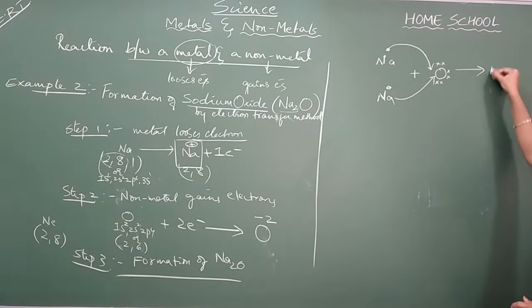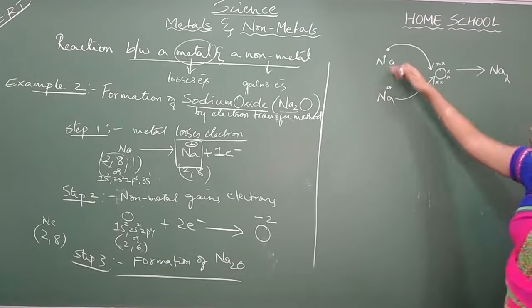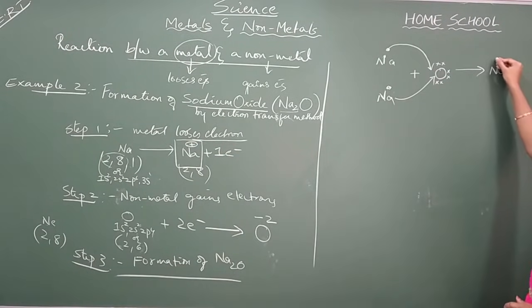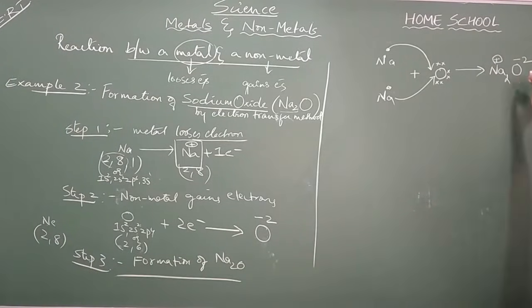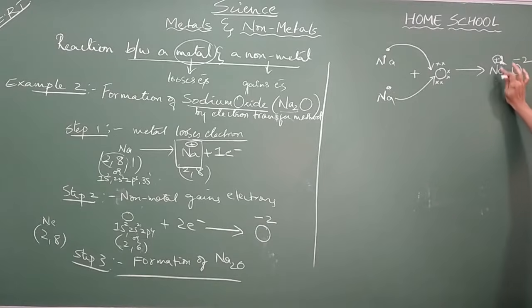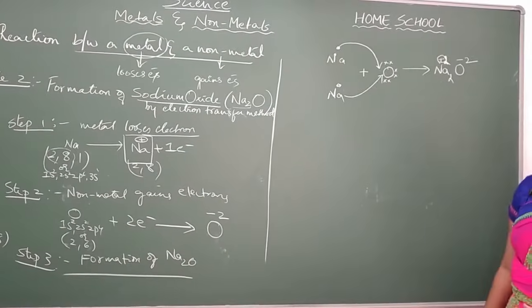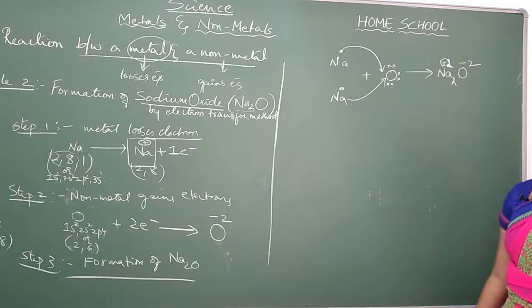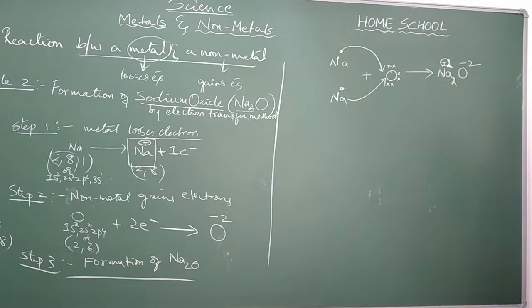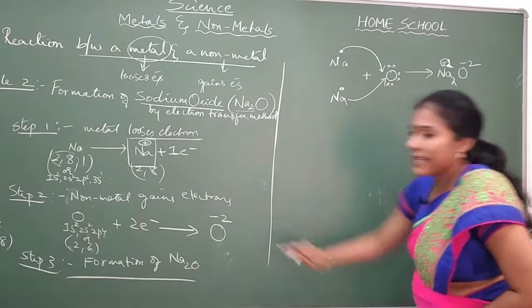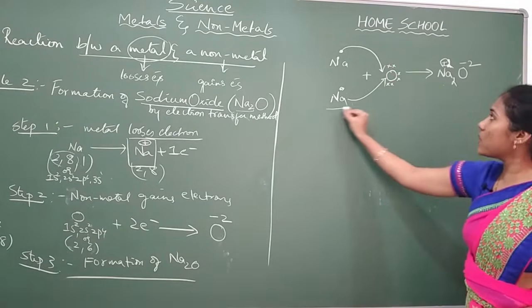So you will be getting 2 Na's combining, and the Na's have a plus charge. Because 2 Na's are there — 1 Na is +1, 2 Na's is +2. And the oxygen has a minus 2 charge. So it is +2 and −2. This is how you write the electron transfer diagram for the formation of Na₂O.